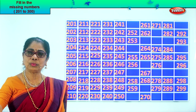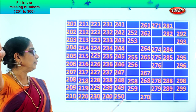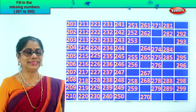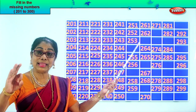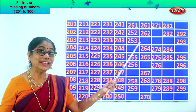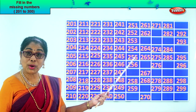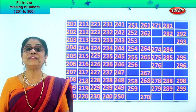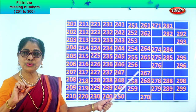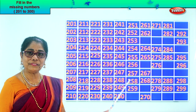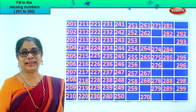After 50. After 0, 1. After 50, 51. So 251. 252, 253. After 3, 4. After 53, 54. 253, 254, 255. After 56, 57. So you write 257. 258, 259. After 9, 10. After 59, 60. 260.